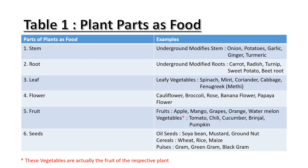The next part is seed. We have different types of seeds based upon their role. The first type is oil seeds - we can extract oil from these seeds and it is used in cooking; for example, soya bean, mustard, and groundnut. The next category is cereals - wheat, rice, and maize are commonly used cereals. The last category is pulses - gram, green gram, and black gram.